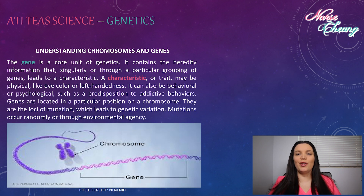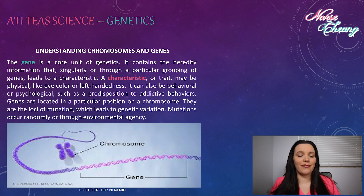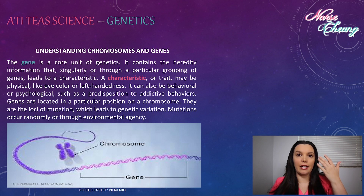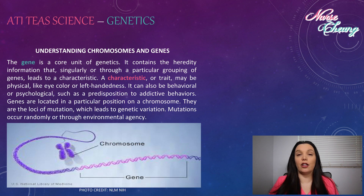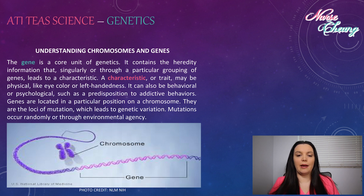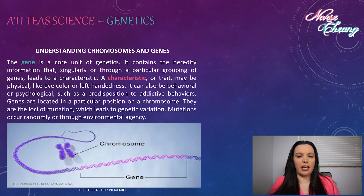The gene is a core unit of genetics. It contains the hereditary information that singularly or through a particular grouping of genes leads to a characteristic. A trait may be physical, such as eye color or left-handedness, or it may be behavioral or psychological, such as a predisposition to addictive behaviors. Genes are located in a particular position on the chromosome, on the loci. Mutation leads to genetic variation and occurs randomly and through environmental agencies.